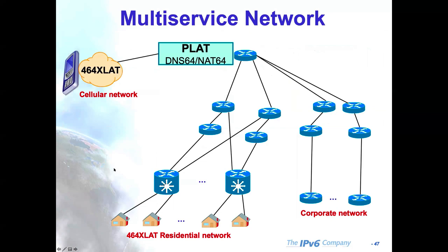To summarize: if you have a multi-service network with residential customers, corporate customers, and server customers, definitely the best solution is using 464XLAT. That's basically the conclusion. To add to the reasons why people should avoid using CGNAT: you need to buy IPv4 addresses periodically — it gets more and more expensive. And you're breaking a lot of applications, which means deploying more ALGs, which causes the Carrier Grade NAT to scale less and less, requiring even more investment in boxes.